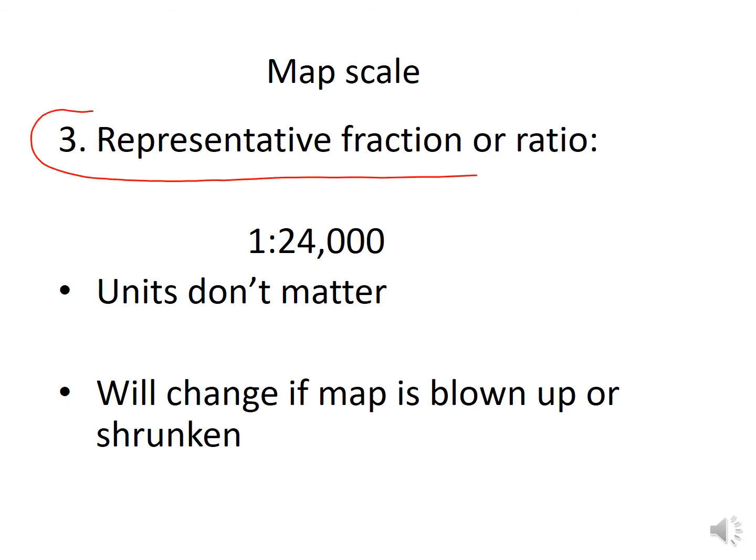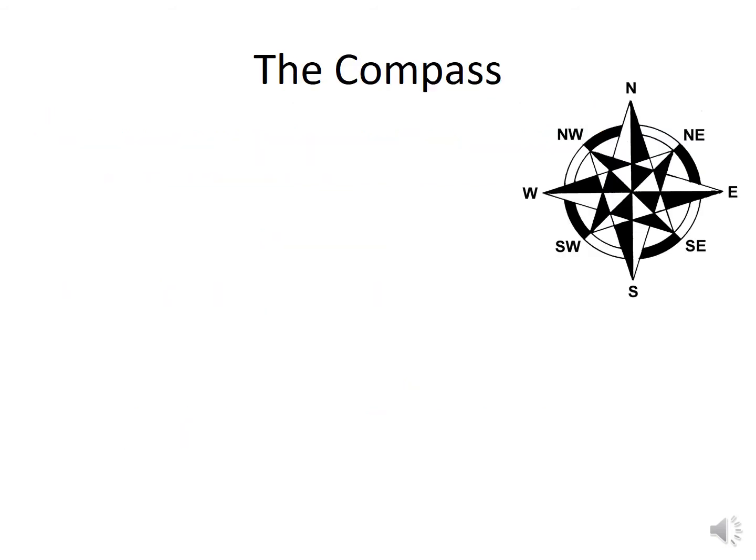Third is the representative fraction or ratio, such as 1 to 24,000 — units don't matter. This will change if the map is blown up or shrunk. If I give you a map on paper it might be hard to read, but on a computer you can zoom in, so there are a lot of different factors at play when reading a map.